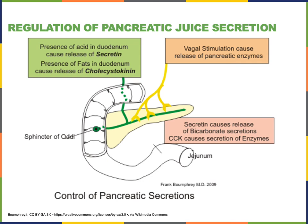When chemoreceptors in the small intestine detect a decrease in the pH of the contents of the duodenum, they stimulate the S cells in the small intestine to secrete the hormone secretin. Then secretin will stimulate the acinar cells in the pancreas to secrete bicarbonate. This functions as a negative feedback mechanism because bicarbonate will then have the action of increasing the pH of the contents of the duodenum.